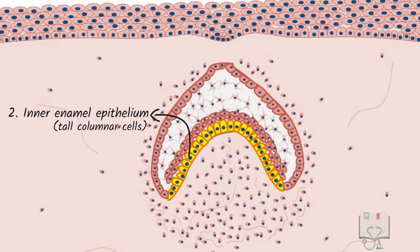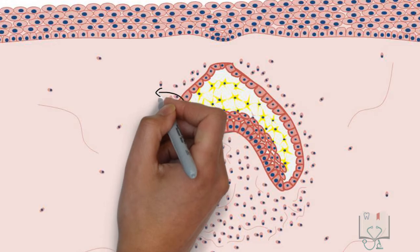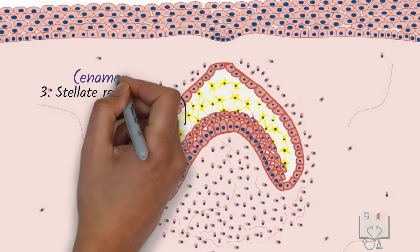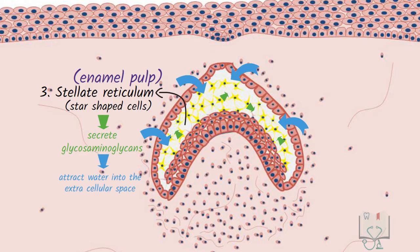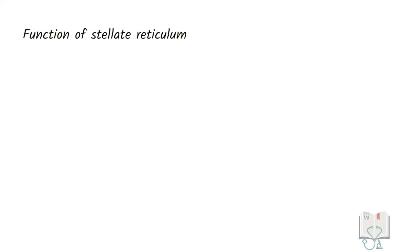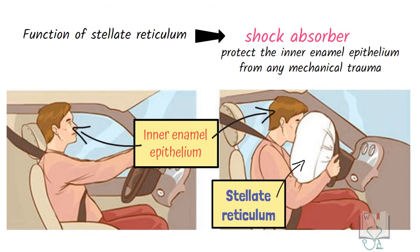These inner enamel epithelium cells later differentiate into ameloblasts and deposit enamel. The cells in the center form the stellate reticulum, or enamel pulp, which are star-shaped. These cells are star-shaped because of the glycosaminoglycans released by the cells, which attract water into the extracellular space. This water, by applying pressure, changes the polygonal shaped cells to star shape. Its function is to act as a shock absorber to protect the inner enamel epithelium from any mechanical trauma.